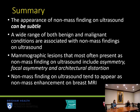In summary, non-mass findings on ultrasound can be subtle, and it's important to see them in two views to confirm a true finding. They can represent a wide range of benign and malignant conditions. The mammographic lesions that often have a non-mass finding correlate include asymmetries, focal asymmetries, and architectural distortion. Non-mass findings on ultrasound also tend to appear as non-mass enhancement on breast MRI. We hope you enjoyed our discussion today on non-mass findings on ultrasound. Thank you.